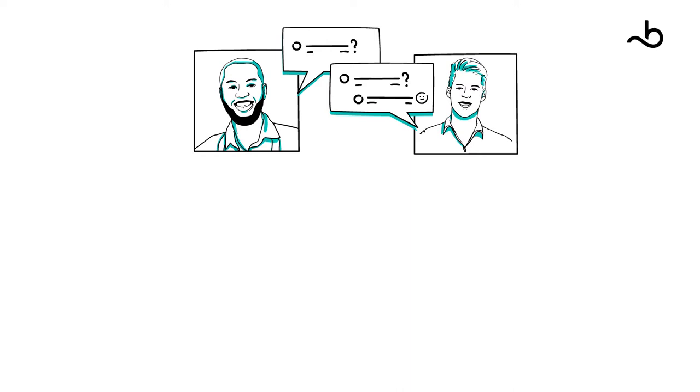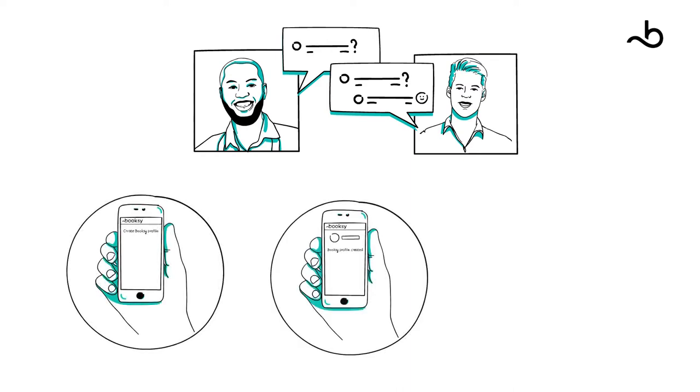Johnny is pleased that he can talk to a real person and ask all the questions that come to his mind. He's even more surprised when he learns that Booksy has already created an account for him so that he can try it out.